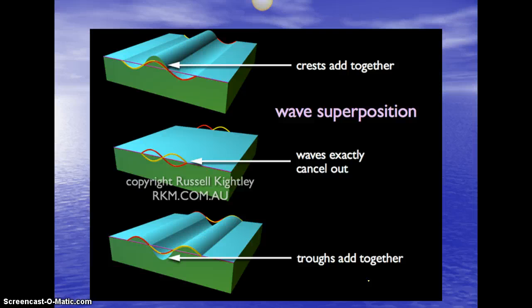So you can kind of see here, crests add together in the top picture and they make this larger wave. Wave superposition, the waves exactly cancel out. So at that point, you can see since the crest and the trough meet and they're the same height type of wave, then they cancel each other out. In this one, the troughs add together and make the larger wave.